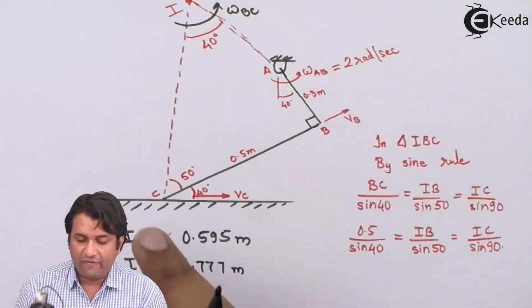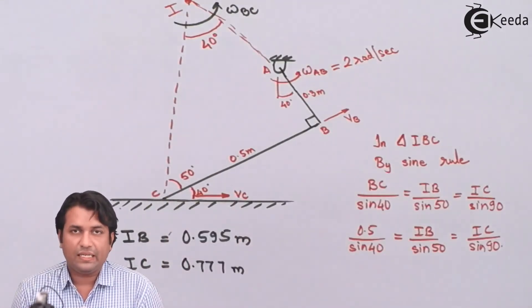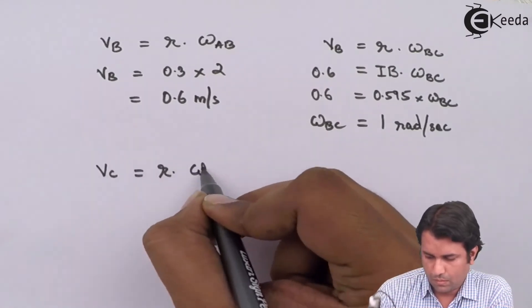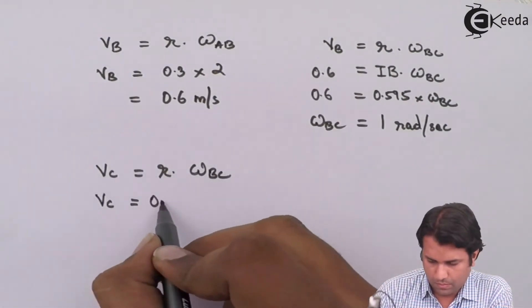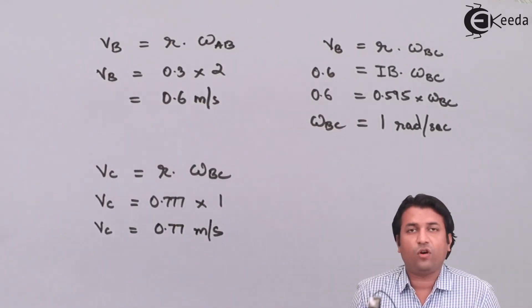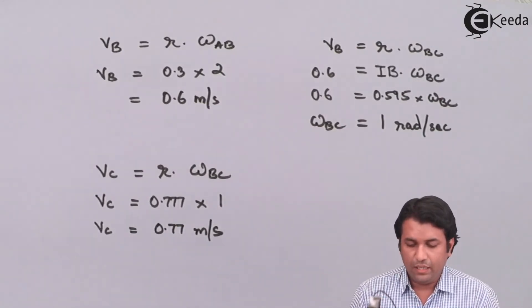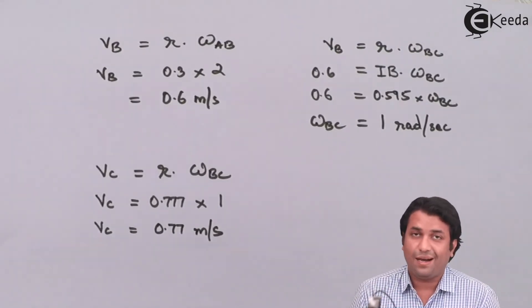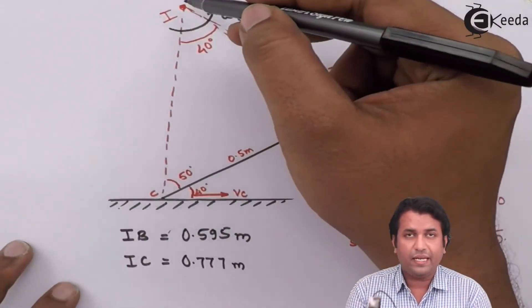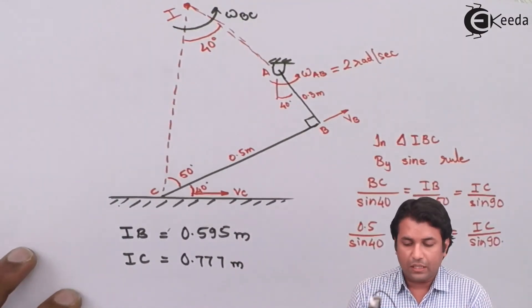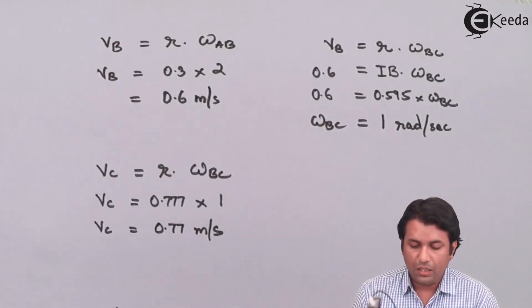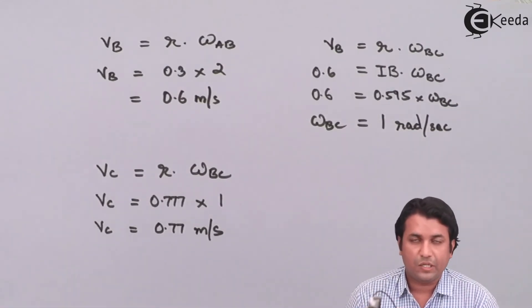Using the same angular velocity, I can find out the velocity of point C. The velocity at C is VC = IC × ω_BC. The distance IC from the instantaneous center to point C is 0.77 meters, and ω_BC is 1 radian per second. Substituting these values, I get the velocity at point C as 0.77 meters per second.